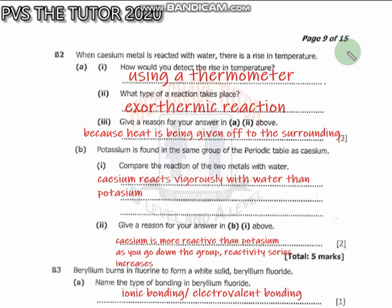Let's go to question B2. When calcium metal is reacted with water, there is a rise in temperature. How would you detect the rising temperature? You need to use a thermometer. Using a thermometer can help you determine the rising temperature - you measure your initial temperature and final temperature.